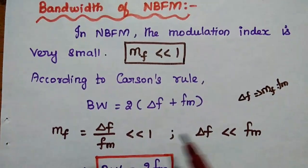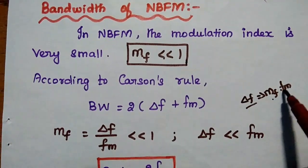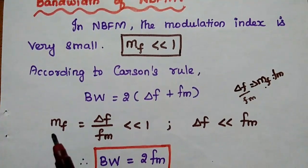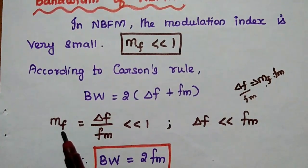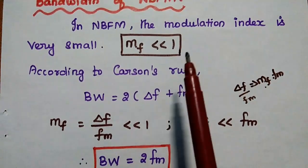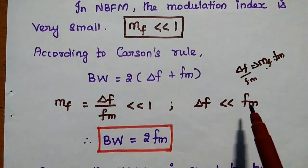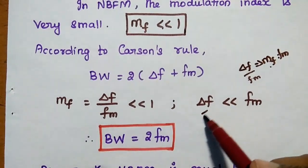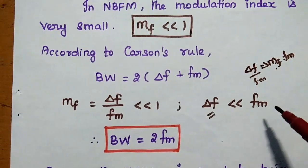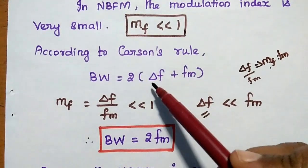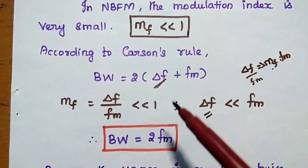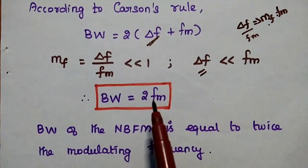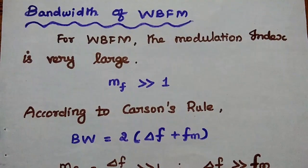From this we can say the modulation index mf is equal to Δf divided by fm. The modulation index of the frequency modulation is equal to Δf by fm, which is much less than 1. So Δf is much less than fm, meaning it is a negligible value when compared to the modulating frequency. In Carson's Rule, we therefore neglect the Δf value. Finally, we obtain the bandwidth of narrow band frequency modulation as equal to twice the modulating frequency.